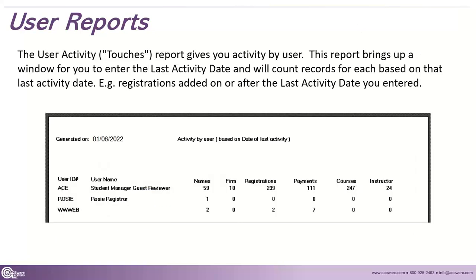Another report is the User Activity Touches — you can see a person's name, how many name records they've hit, firms, registrations, and all of these things. You can put in a date for last activity so that, for example, in the last month, how many records have been affected by each user.